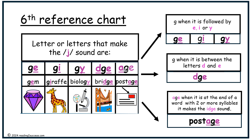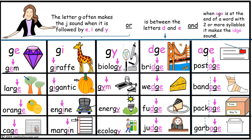Sixth reference chart. Letter or letters that make the J sound: G when it is followed by E, I, or Y, as in gem, giraffe, and biology; DGE when it is between the letters D and E, as in bridge; and -AGE at the end of a word with two or more syllables, making the -IJ sound as in postage. This reference chart provides a list of words for letters that make the J sound.